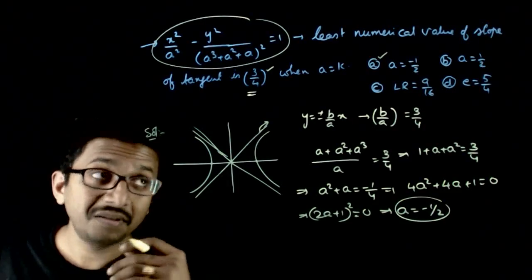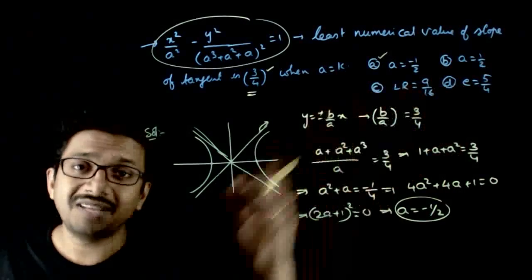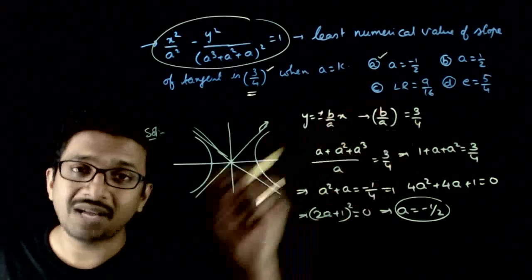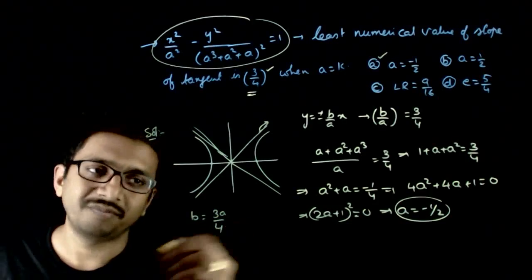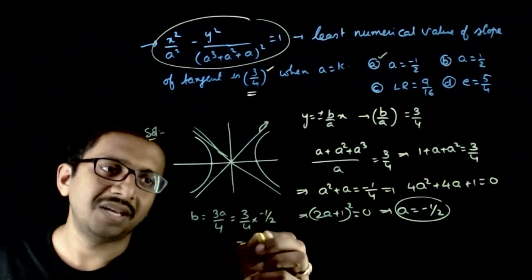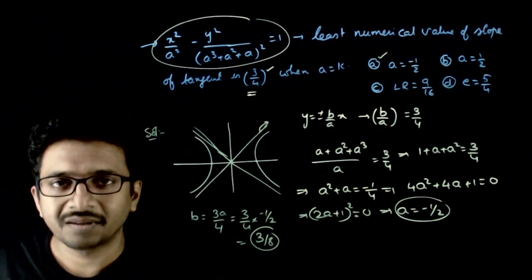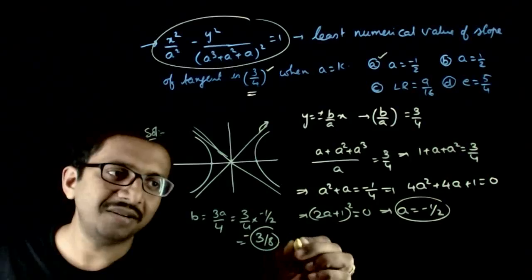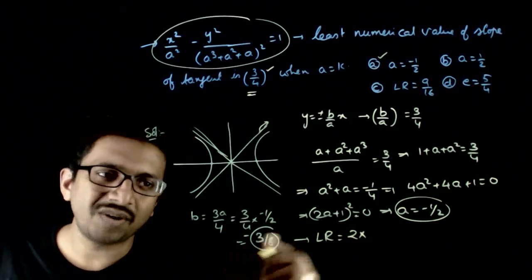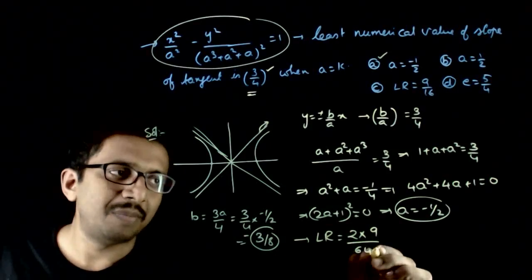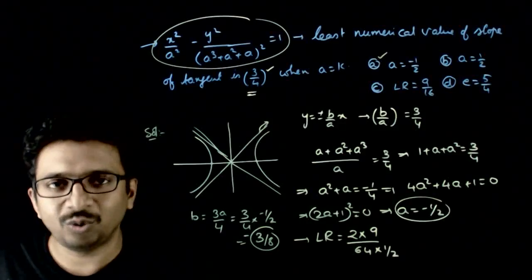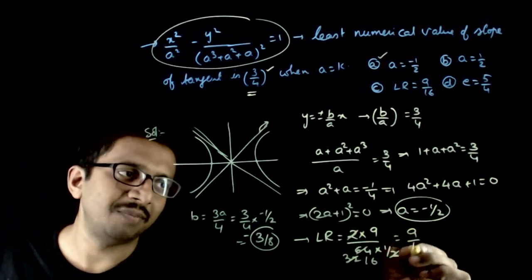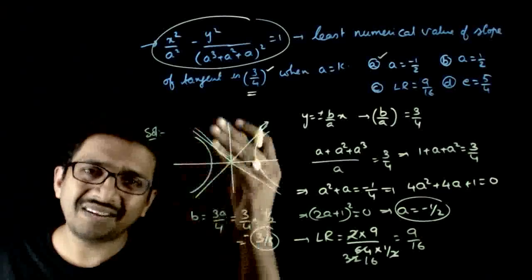Now, what is the value of the latus rectum and the eccentricity? When a = -1/2, what is the numerical value of b? b = (3/4)·a = (3/4)·(-1/2) = -3/8, so the numerical value is 3/8. The latus rectum is 2b²/a = 2·(9/64)/(1/2) = 9/16. So the latus rectum of this hyperbola is 9/16, so option C is correct.